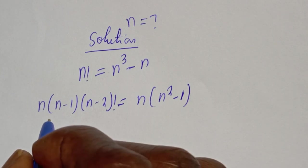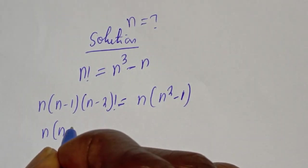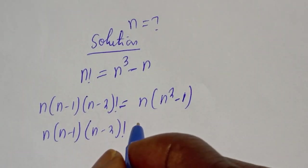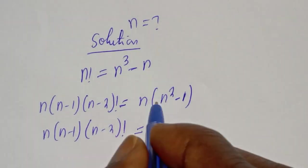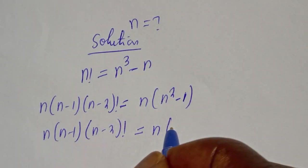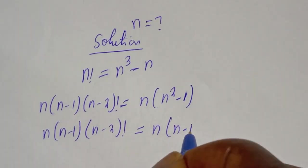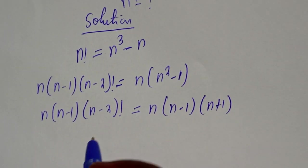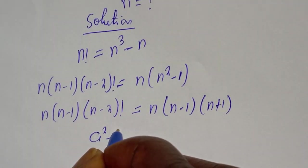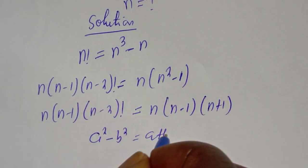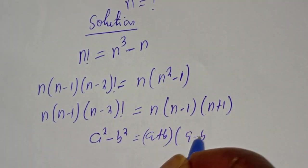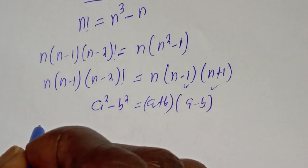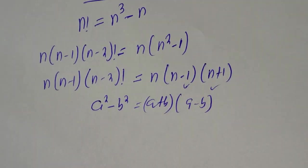Then, this is n bracket n minus 1 bracket n minus 2 factorial, is equal to n bracket n minus 1 bracket n plus 1, because this is in the form of a perfect square. Remember, if you have a squared minus b squared, this is equal to a plus b bracket a minus b. That is how we get these two values.